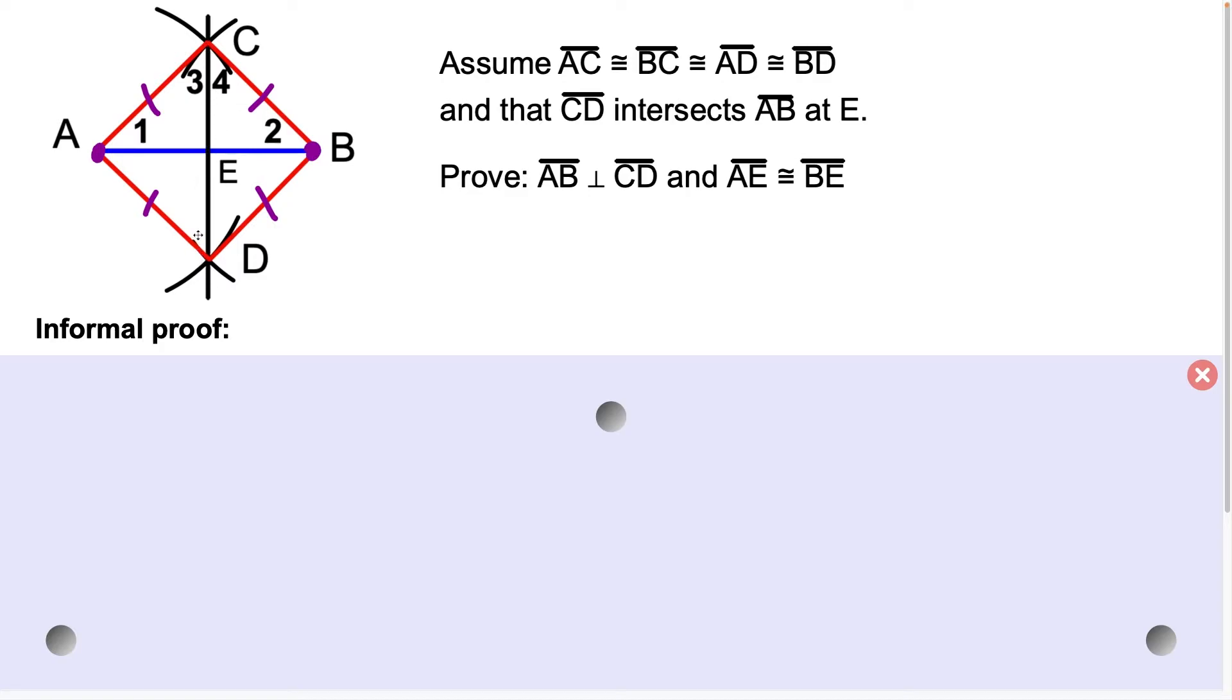But we could also say here that CD intersects AB at point E, and this is just so that the letters match up to what we have before. But now the goal is to prove that we have a perpendicular bisector, which means we need to prove that segment AB is perpendicular to segment CD, and then we need to prove that segment AE is congruent to segment BE.